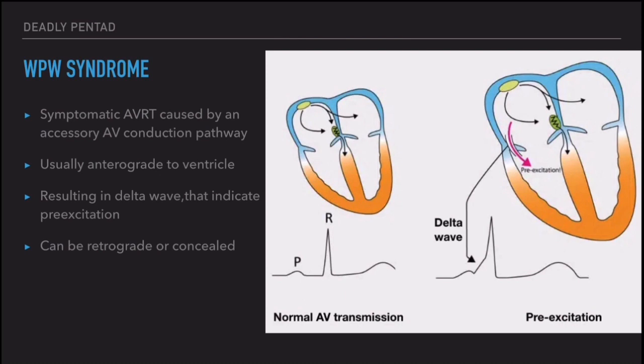Normally, atrial depolarization is conducted to the ventricular myocardium through the AV node — the only connection between atrium and ventricle. But in some persons, there can be an accessory pathway that connects the atrium to the ventricle. In WPW syndrome, the depolarization is conducted anteriorly through this accessory pathway, resulting in early ventricular depolarization called the delta wave, because the accessory pathway conducts faster — unlike the AV node which has a delay of 120 to 200 ms.